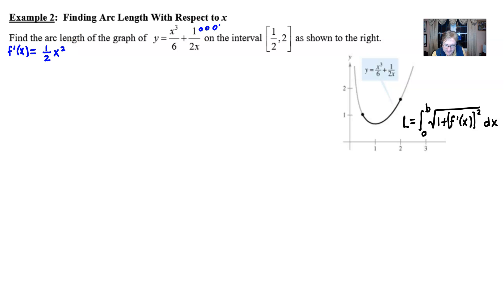To differentiate one over two x you might temporarily let him dream about being one half x to the negative one and then the derivative of that would be minus one half x to the negative two power at which point I could put that x to the two into the denominator.